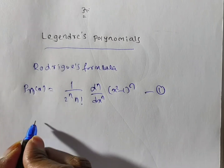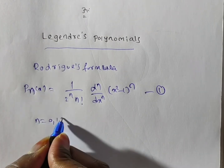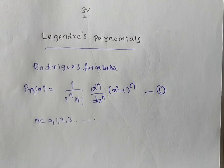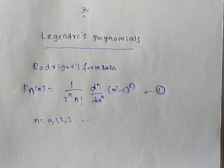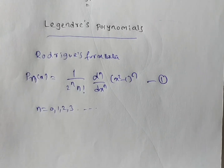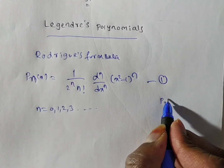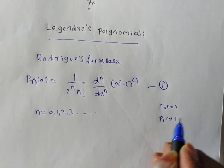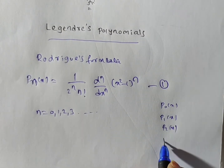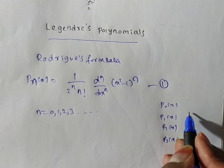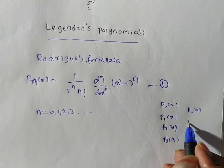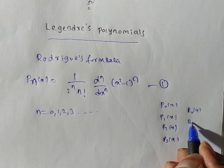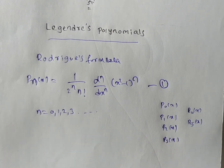If you put n equal to 0, 1, 2, 3, and so on in this formula, it gives the Legendre polynomials. Now we have to find the Legendre polynomials. I am going to solve P0(x), P1(x), P2(x), P3(x). If you put n equal to 4 then we have P4(x), P5(x). Generally they ask up to P5 only.